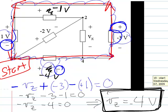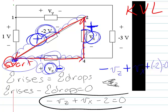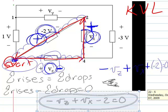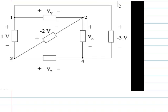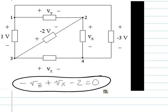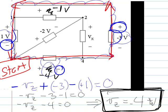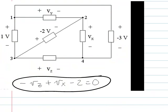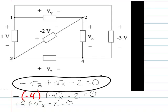Now we can use this information on what we found the first time. Remember from that very first equation we have minus VZ plus VX minus 2 equals 0. VZ is negative 4 volts, so we plug that in: minus a negative 4 plus VX minus 2 equals 0. That ends up with plus 4 plus VX minus 2 equals 0, so VX plus 2 equals 0, which means VX is equal to negative 2 volts. So now we actually have a value for VX, VY, and VZ.